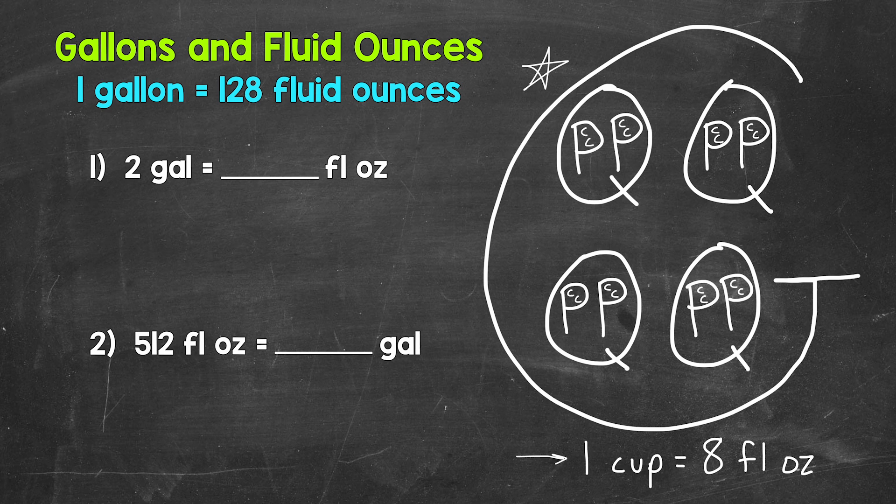Starting with number one, where we have two gallons equals how many fluid ounces? Well, each gallon equals 128 fluid ounces, so we have 128 fluid ounces and 128 fluid ounces. So we need to do two times 128. And that's how we convert gallons to fluid ounces. We multiply by 128.